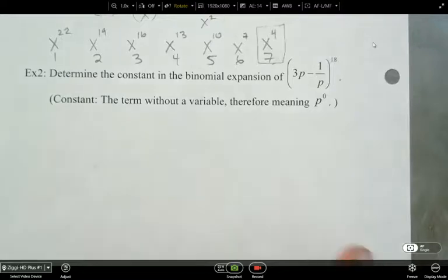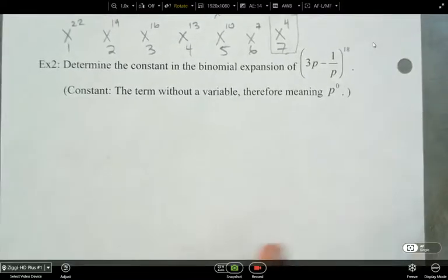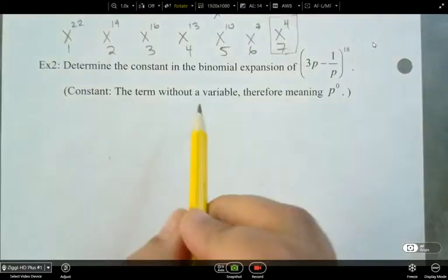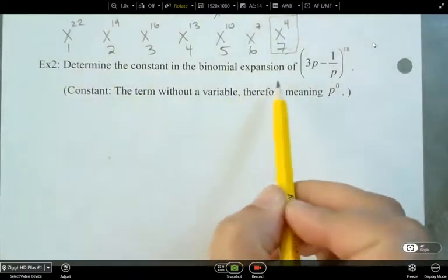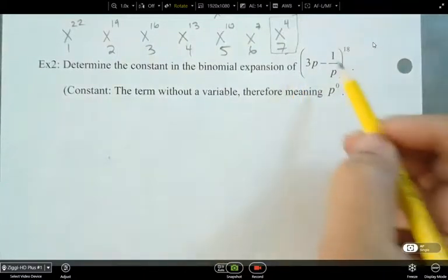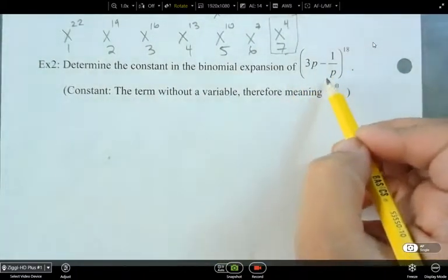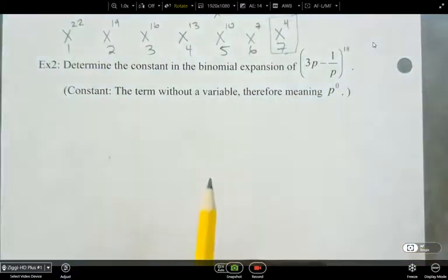So we're continuing with the binomial theorem. This is going to be example 2. Here we're going to determine the constant in the binomial expansion of 3p minus 1 over p all to the power of 18.